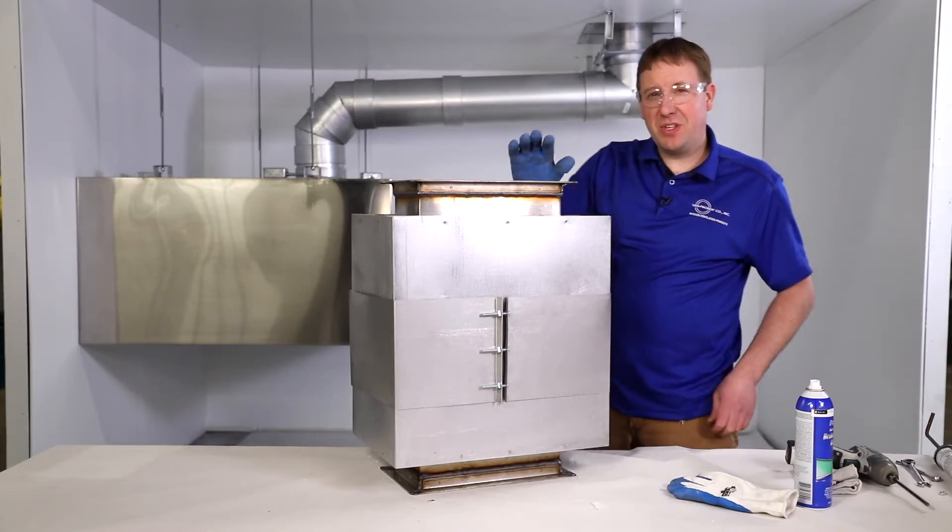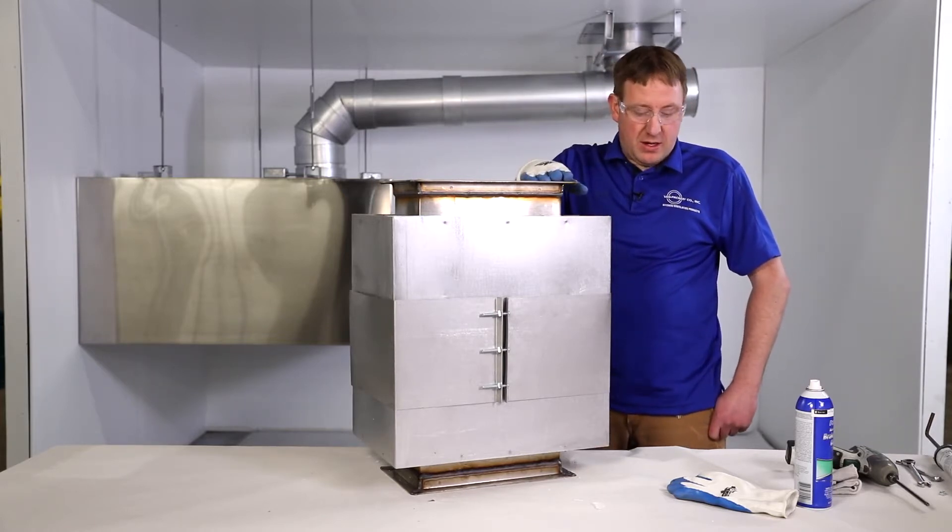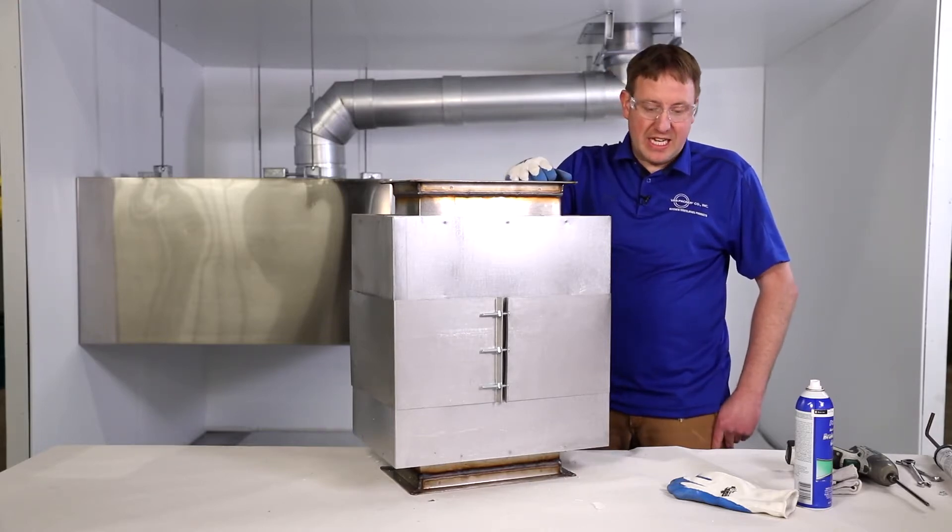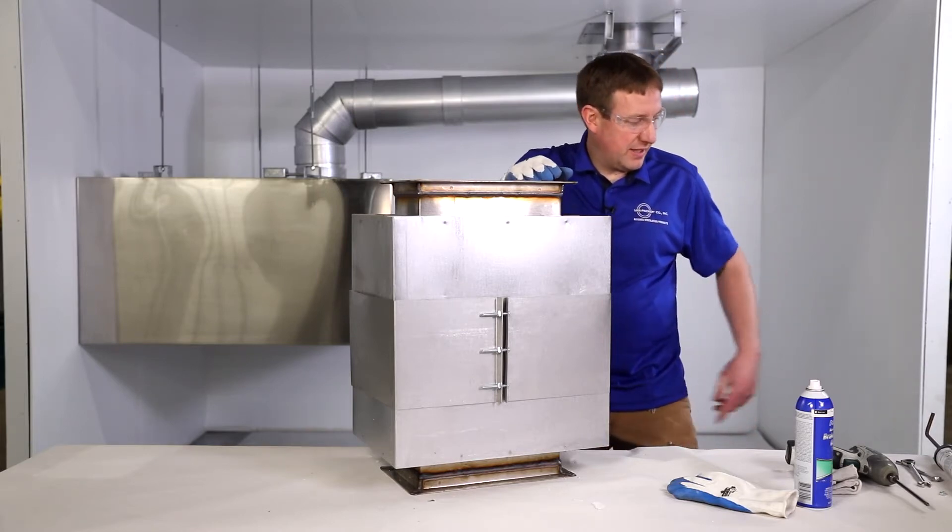I always assemble things the easiest way. As you can see, I'm doing it here on the table. What I would do is assemble a few pieces, depending on how big or small it was, on a table or a workbench. And then I would use our lifting devices to lift things into place.